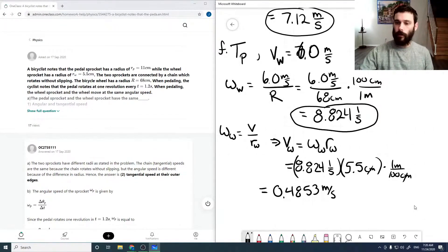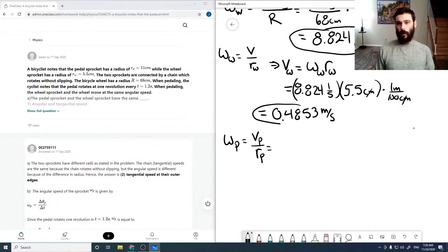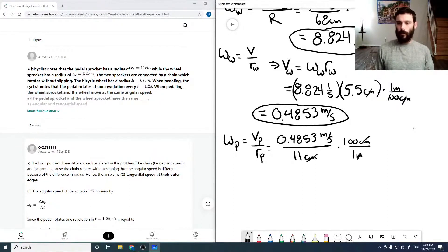Now, this tangential velocity will be the exact same as for our pedal. So our omega pedal is this V over our pedal. Now, this V will be our V, so 0.4853 meters per second over the pedal radius, which is 11 centimeters. Throwing in appropriate unit conversions. So this stuff cancels.